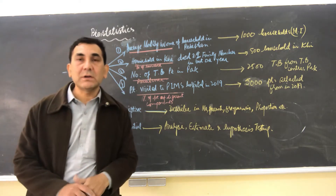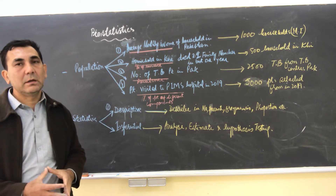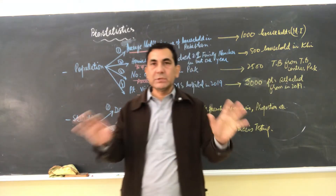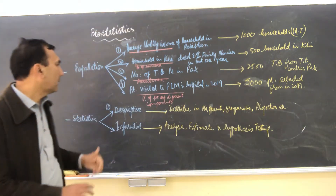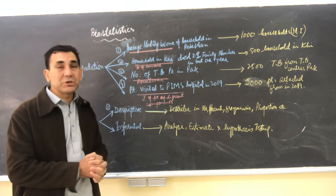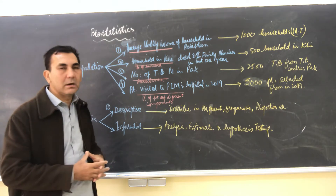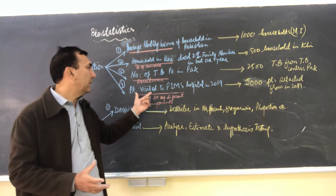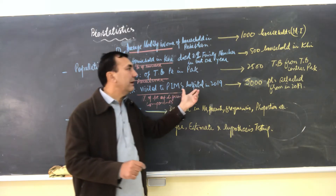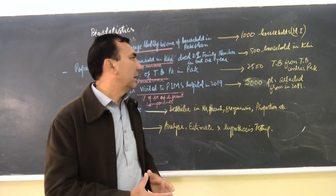The third example: the total number of TB patients in Pakistan is the population. If you select two thousand five hundred TB patients from different TB centers across Pakistan, that is the sample. Similarly, all patients who visited PIMS hospital in 2019 is the population. If anyone selects five thousand patients who visited PIMS hospital in 2018, that is the sample size.